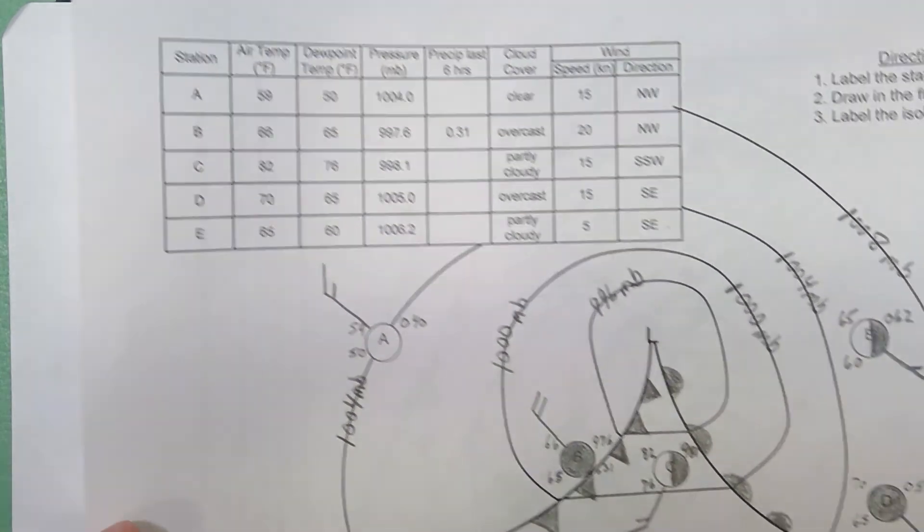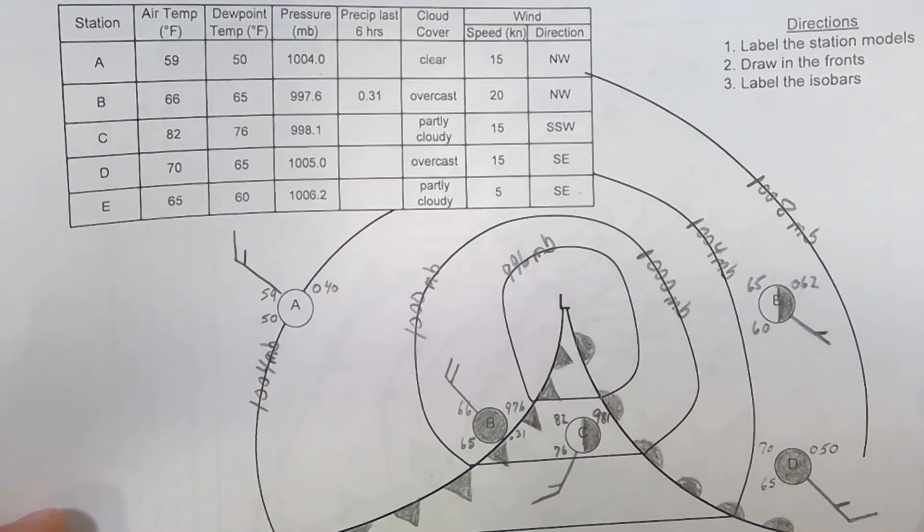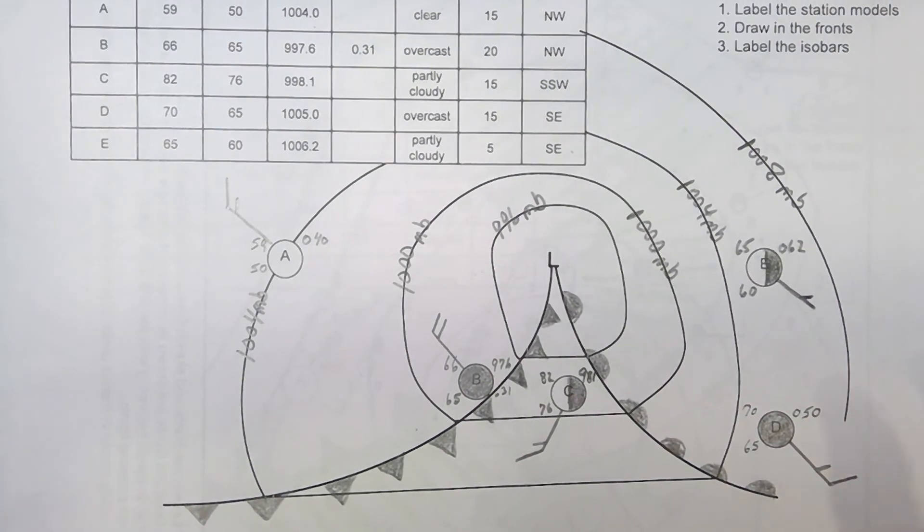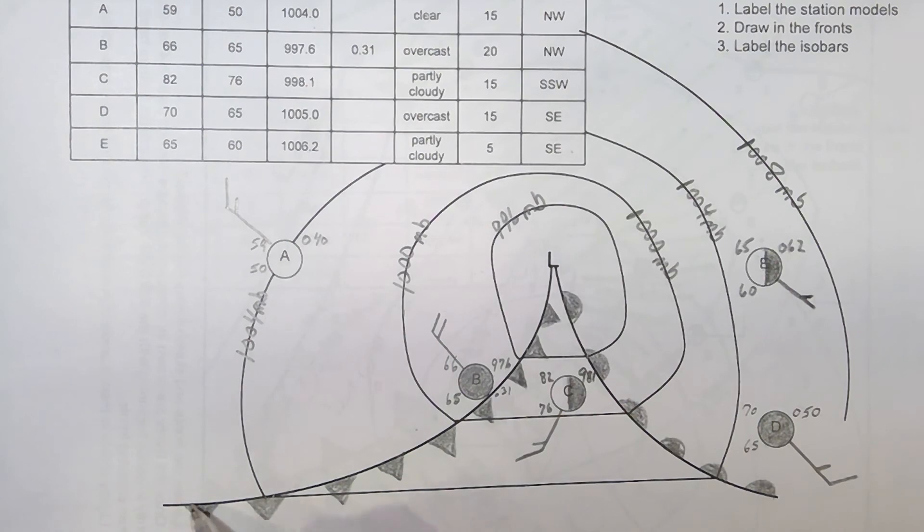Here we go. This is a completed model for this low-pressure cyclonic storm system. You'll note that you should have had this as your cold front. Cold front gets short, heavy precipitation. The only station where precipitation is actually indicated was this station that has gotten 0.31 inches of rain in the last six hours. The temperature is closest to the dew point, which means the air is closest to being saturated.